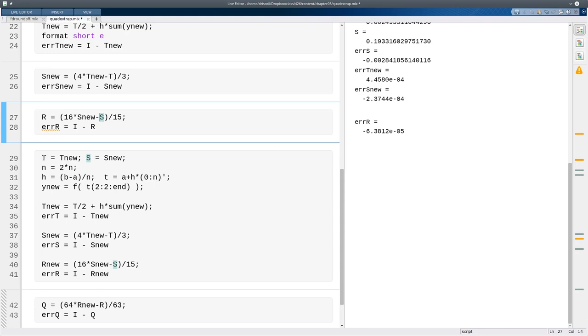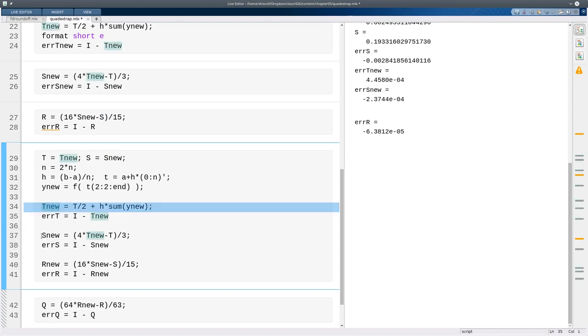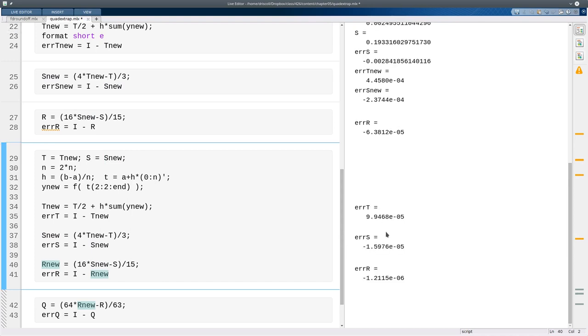One more time through. So now I've used the most recent two values of t, so I have to update what I consider to be the old. I've used two values of s, so I can get rid of the oldest and call the new one the old one. This is all the same. Get a new value for the trapezoid. From that, I get a new Simpson. From that, I get a new r. They're all better than their previous counterparts, with the r value being the best one yet.